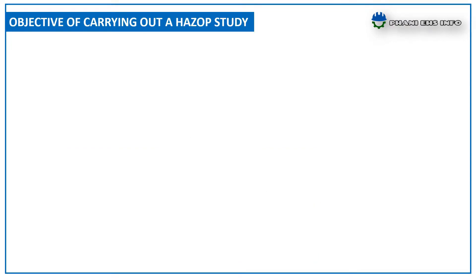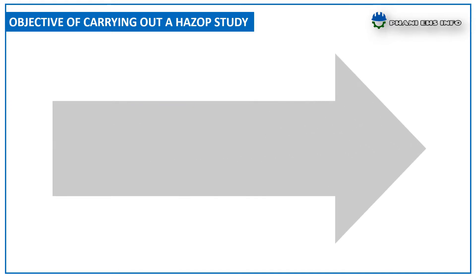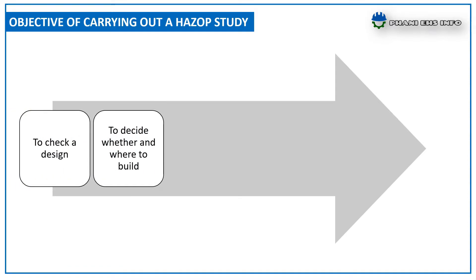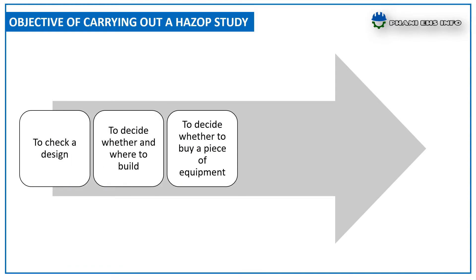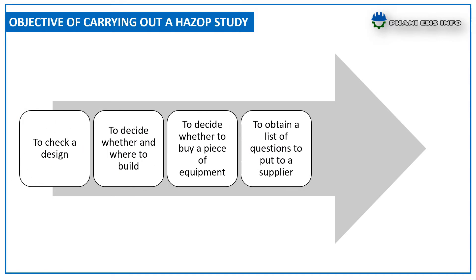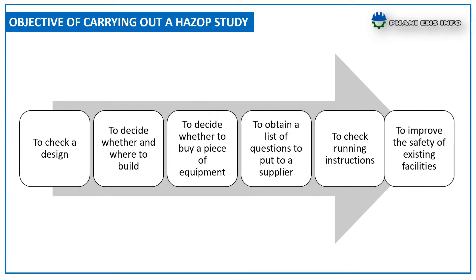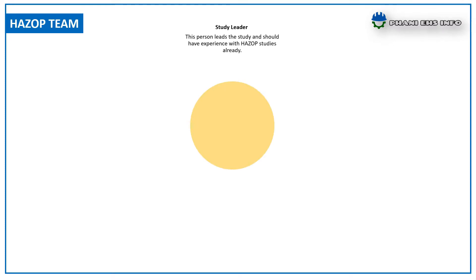The objective of carrying out a HAZOP study is to check a design, to decide whether and where to build, to decide whether to buy a piece of equipment, to obtain a list of questions to put to a supplier, to check running instructions, and to improve the safety of existing facilities.